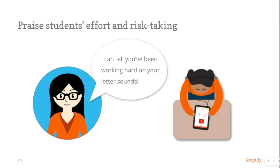As your kids use the Practice App, recognize their progress with statements that promote a growth mindset. When kids unlock eggs, praise students' efforts with specific feedback such as, 'I can tell you've been working hard on letter sounds.' Kids who haven't yet unlocked eggs should also receive feedback that reinforces effort and risk taking. For example, if your student is having trouble with a game, you can help him or her and then say, 'I like how you keep trying.'